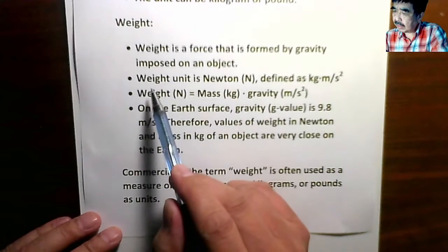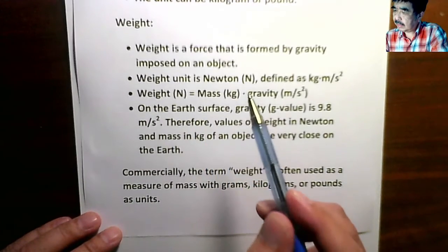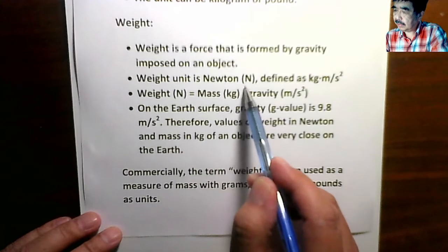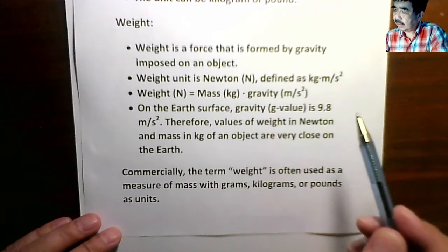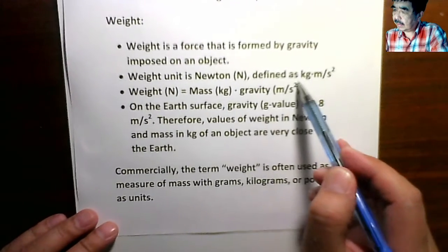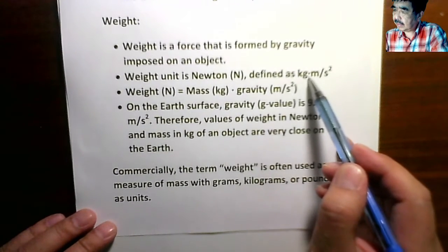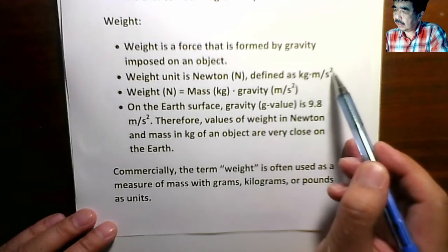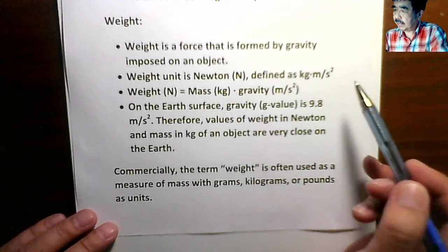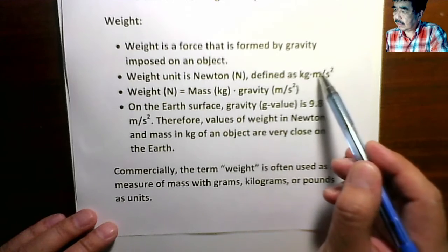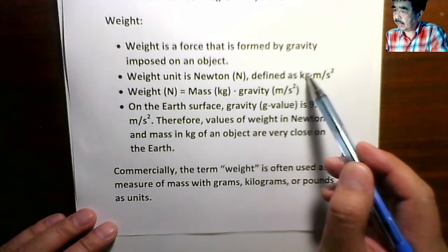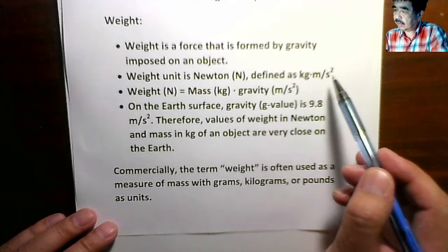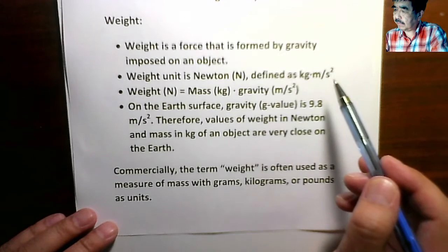Okay, so weight unit in scientific term is Newton, capital N, defined as kilogram multiplied by meter over second square. The kilogram is the unit of mass and the meter per second square is a unit of acceleration.